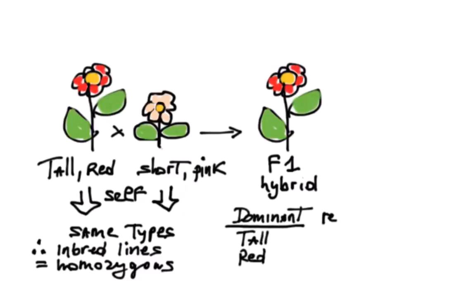We're looking at two characters, height and color, which are determined by independent genes. We can assign genotypes to all individuals.